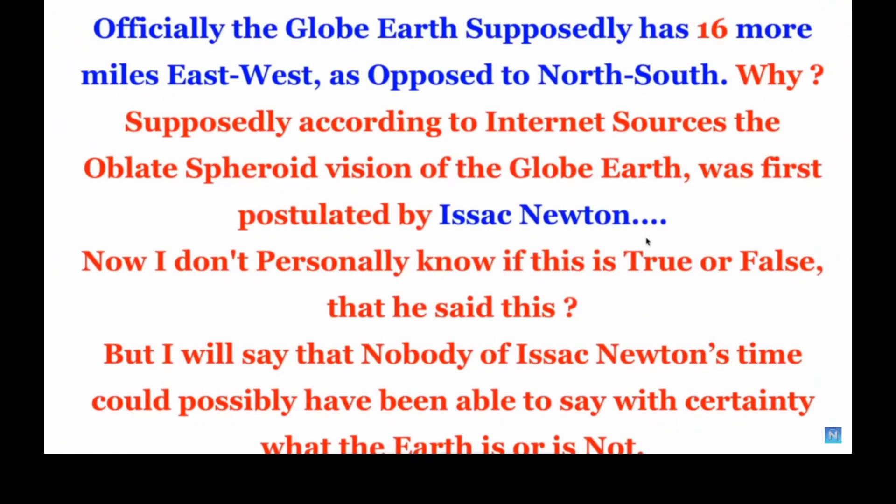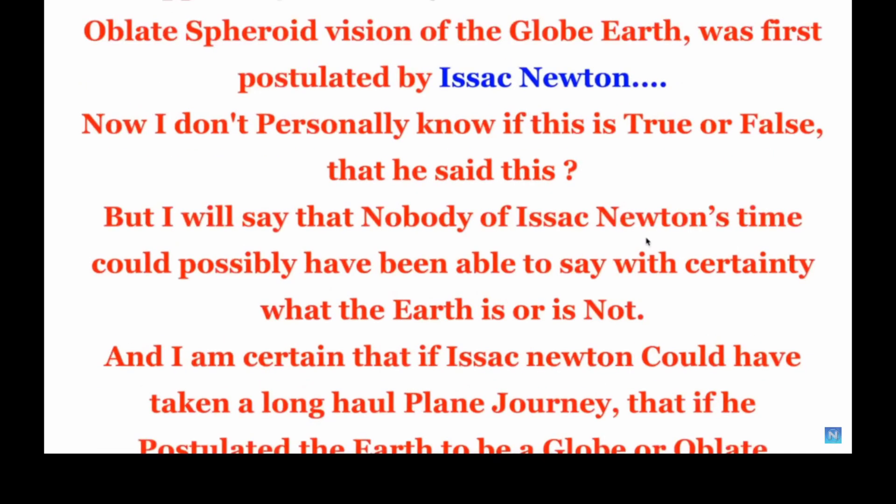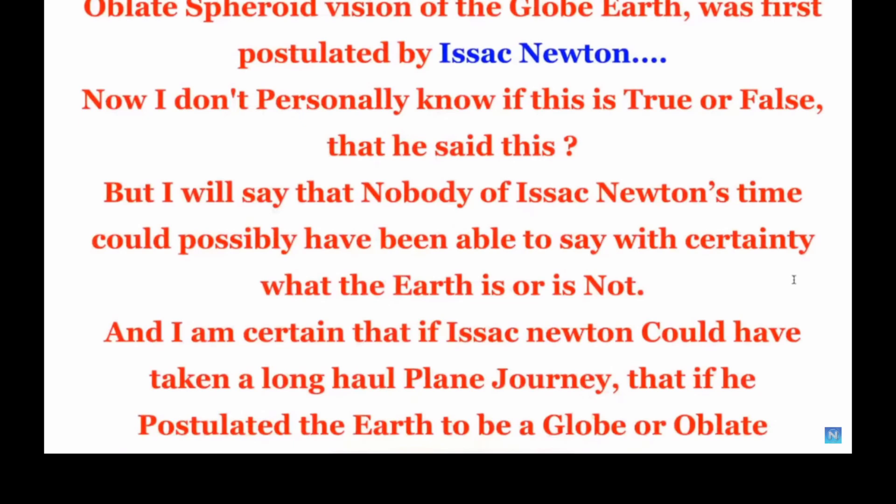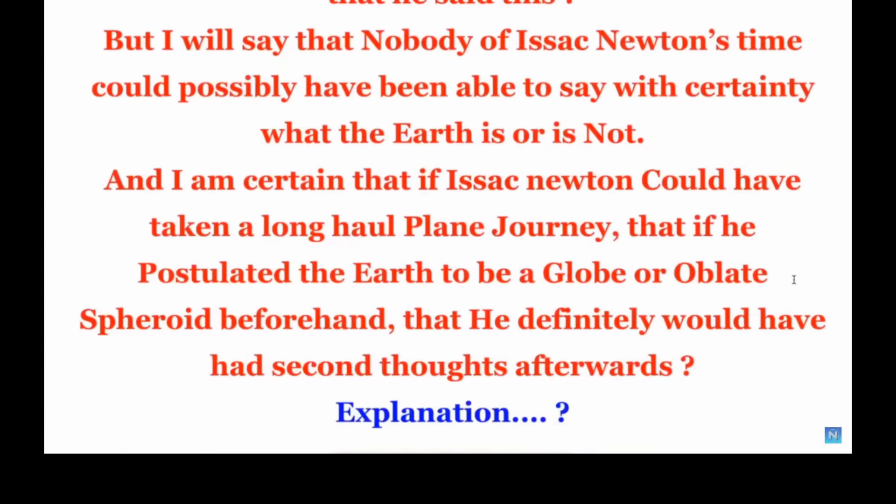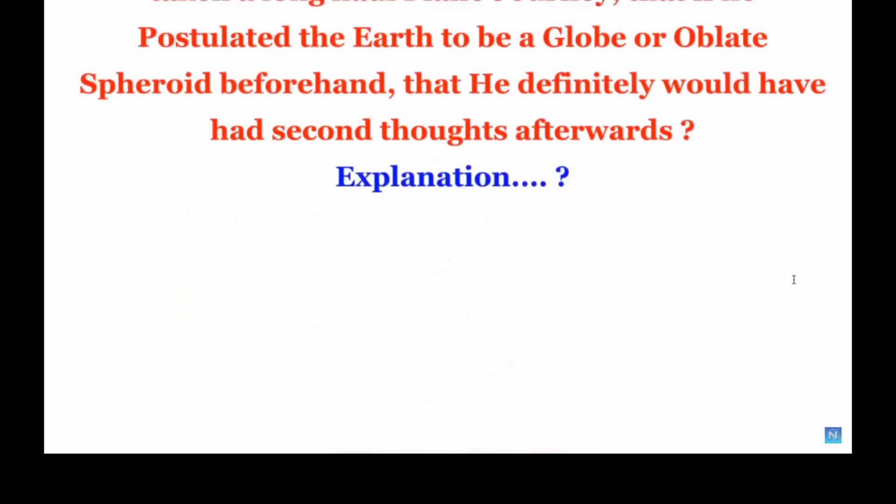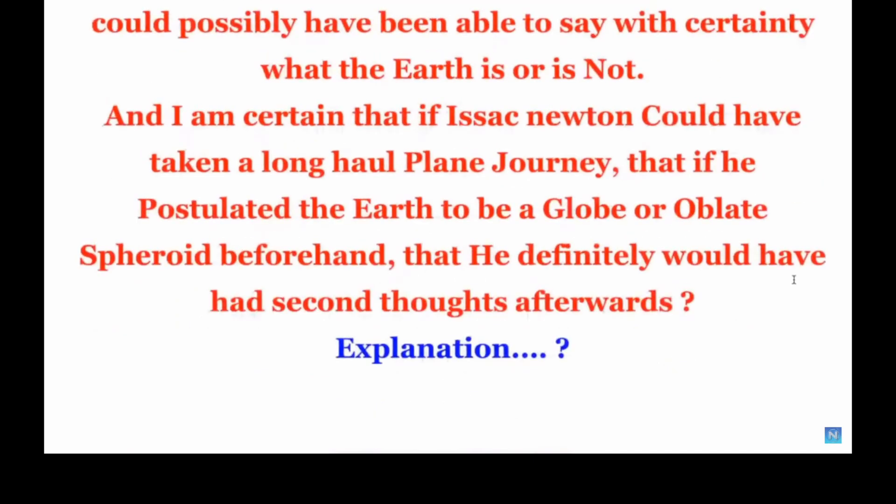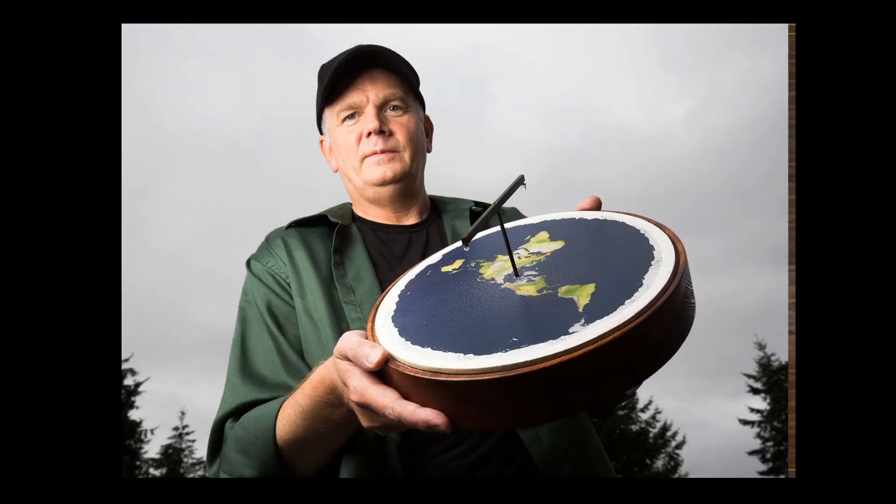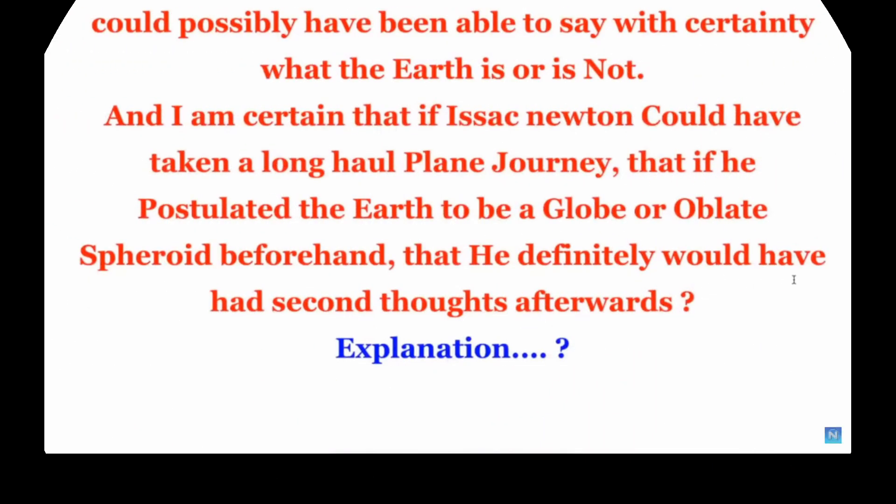The earth is an oblate spheroid because it rotates. That causes centrifugal force and that causes it to bulge slightly at the equator. It's very, very slight. The graphic on the right is highly exaggerated. The graphic on the left is what you actually see. The bulge is so slight, it's imperceptible when you're looking at the entire earth. Oh, by the way, you spelled Isaac wrong.